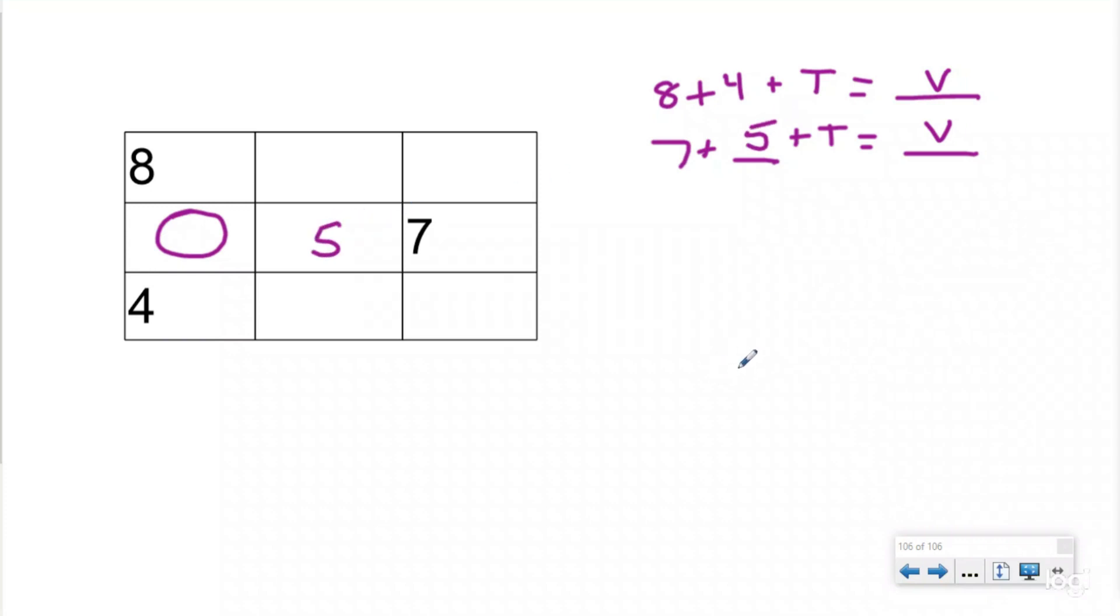So now we're going to use that same concept to help us find our next number. So he also said the diagonals are going to be equal to the columns and the rows, which means now that I know two of the numbers in this diagonal, eight plus five plus this number right here are going to equal v, which means it shares this addend with four and this other number. So now four plus something plus this number is going to equal v.